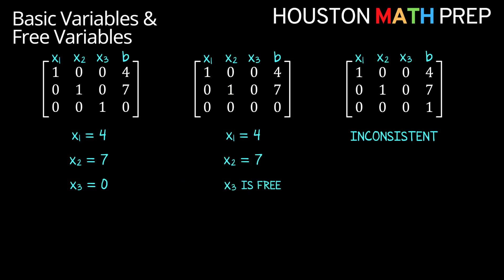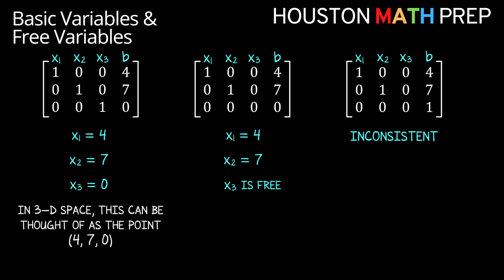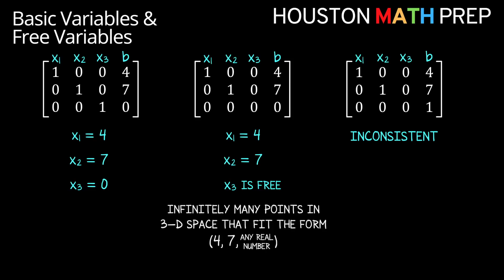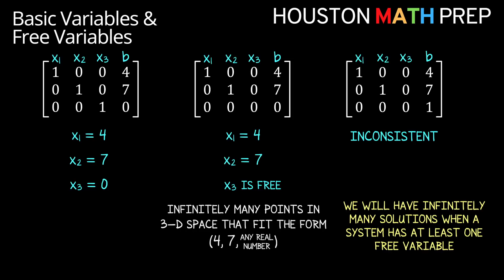In the middle matrix, x3 is a free variable. For the first system, we have specific values for each variable — that's like having all three coordinates to locate a specific point in 3D space, the point (4, 7, 0). For our other system, if x3 is free and allowed to take on any value, then we have specific values for the first two coordinates and the last can be anything. So (4, 7, 0), (4, 7, 5), (4, 7, -1,000,000), and so on are all solutions. We get infinitely many solutions when a system has at least one free variable.